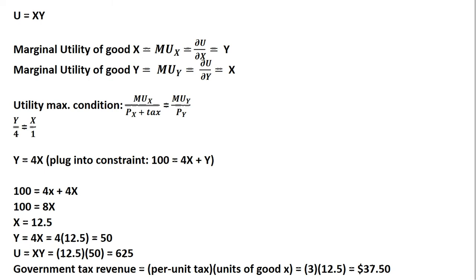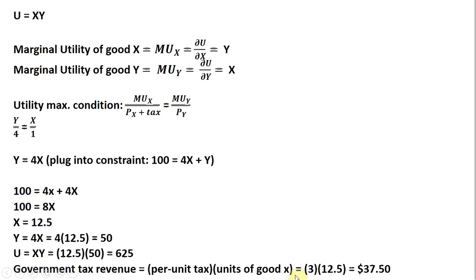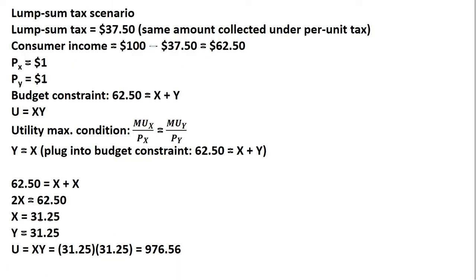All right, let's now look at a lump sum tax. So the lump sum tax scenario: the lump sum tax will be $37.50, equivalent to the amount of tax that the consumer paid under the per-unit tax structure, or the excise tax structure. So how do we incorporate that information? We're going to take the consumer's income of $100, and we're going to subtract $37.50 from it, leaving the consumer now with $62.50 to spend on good X and good Y. The price of good X is $1. There's no longer per-unit tax here on good X. And the price of good Y is $1, as it was in the first example. So our budget constraint is 62.5 equals X plus Y.